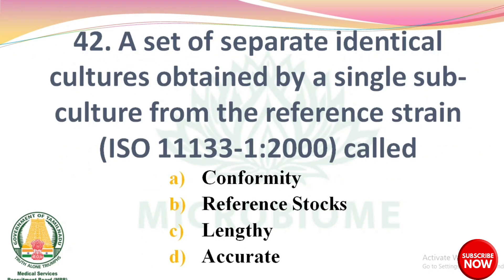Next question: A set of separate identical cultures obtained by a single subculture from the reference strain, ISO 11133-1:2000 — options: conformity, reference stocks, lengthy, accurate. The right answer is option B: reference stocks.